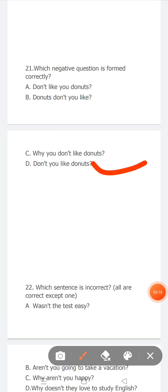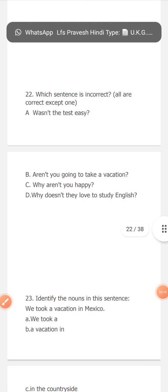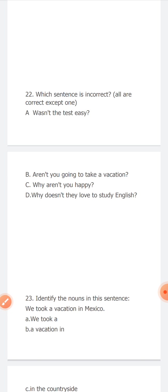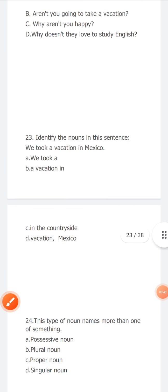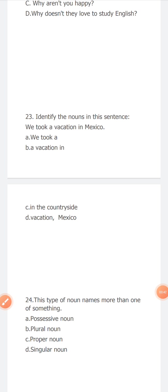Now next, which sentence is correct? All are correct except one. Wasn't that test easy? Aren't you going to take a vacation? Why aren't you happy? Why doesn't they love to study English? So which is incorrect? Why doesn't they love to study English. Identify the nouns in this sentence. We took a vacation in Mexico. Vacation and Mexico—it is the noun.